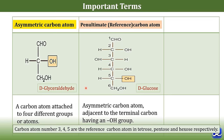In tetroses there are four carbon atoms, so the third carbon is the reference carbon atom. In pentoses the fourth one is the reference carbon atom, and in hexoses — for example in glucose — the fifth one is the reference carbon atom.